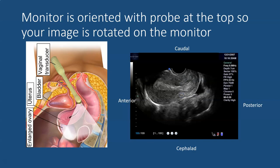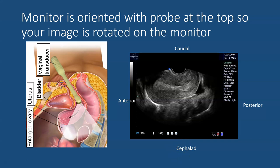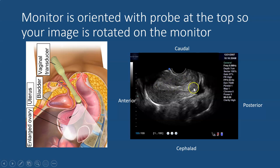On our monitor, the monitor is oriented such that the probe is at the top of the screen, so our image is going to be rotated. The top of the screen is where the probe is placed — this is the caudal end. The area away from the probe will be the cephalad or towards the patient's head. The indicator is directed anteriorly such that the indicator on the monitor screen will be the patient's anterior aspect and the area away will be posterior. Here one can see the long axis or sagittal view of the uterus with a small amount of fluid in the cul-de-sac.